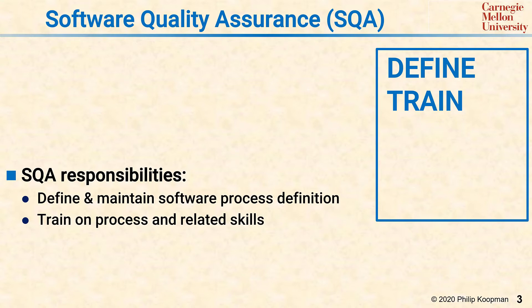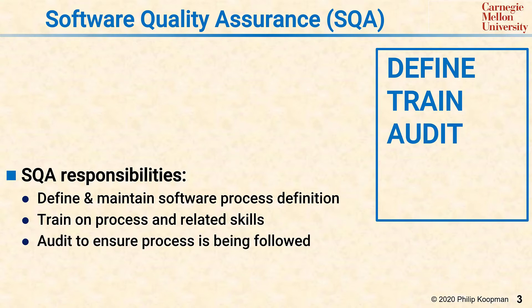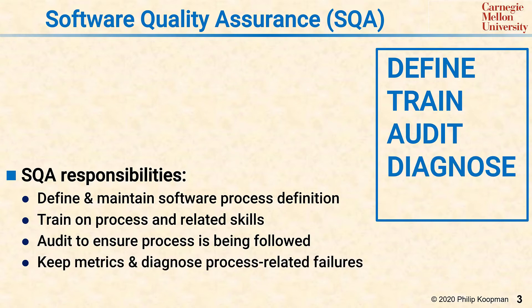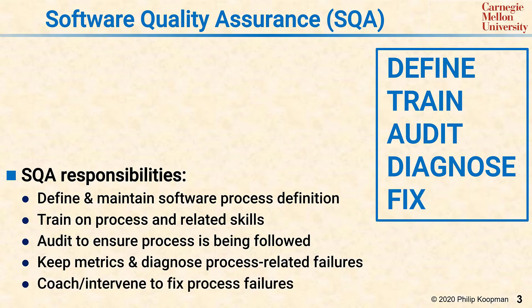SQA is also responsible for auditing to ensure the process is actually being followed. SQA includes diagnosing issues with executing the process — that involves keeping metrics and diagnosing process-related failures. Finally, SQA is responsible for fixing any process failures, which can include coaching or otherwise intervening to find out what's going wrong with executing the defined process and get things back on track.